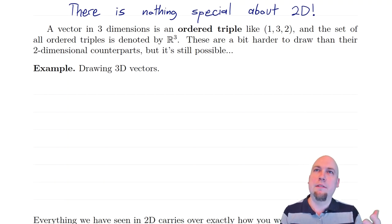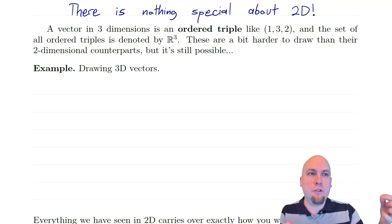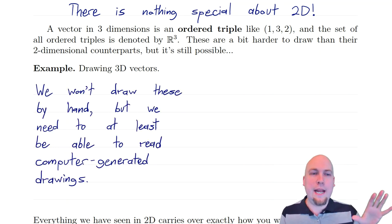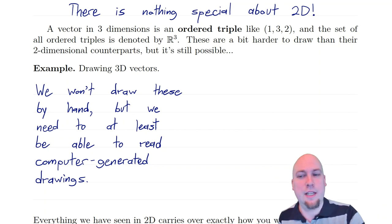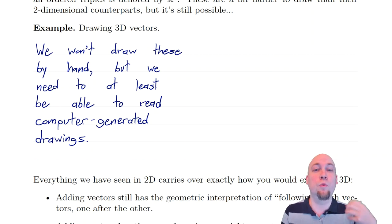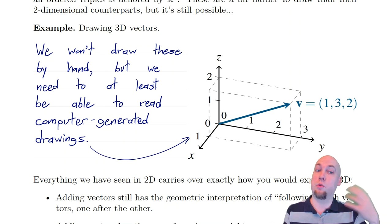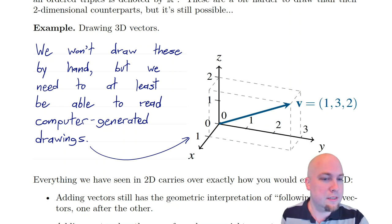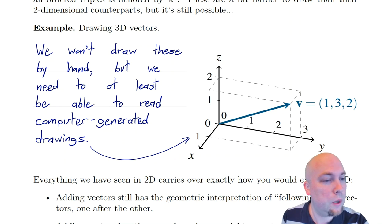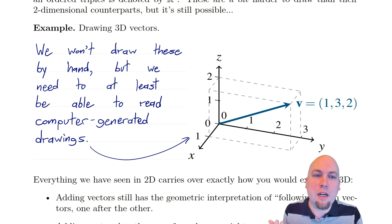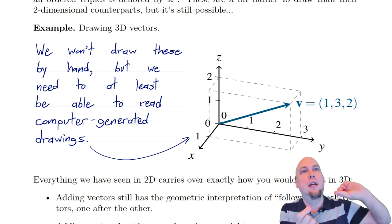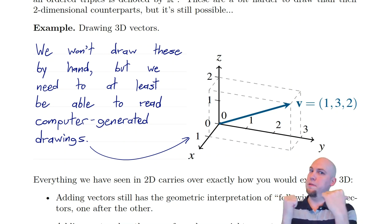What does this look like geometrically? Vectors geometrically are arrows representing motion or displacement. Because there are three entries, it's an arrow in three-dimensional space. I'm not actually going to draw these by hand — drawing in three-dimensional space, I'm not good at it, and I'm not going to expect you to in this course. But you do need to be able to read drawings of three-dimensional vectors. For the vector 1, 3, 2, this means the vector goes a distance of 1 in the x-direction, then 3 in the y-direction, then 2 in the z-direction. What the x, y, and z directions are is a little bit arbitrary — usually we have the z-direction going up and down, but that's just convention.